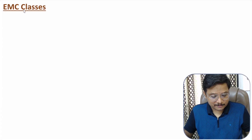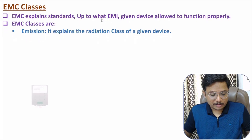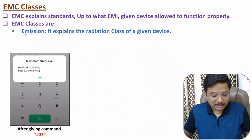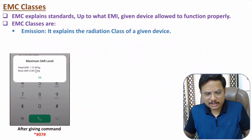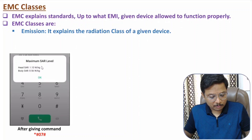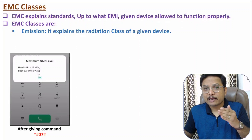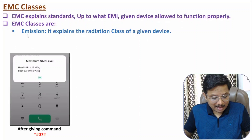Now I will discuss about EMC classes. EMC explains standards for up to what level of EMI a given device is allowed to function properly. The first class of EMC is based on emission — it explains the radiation class of a given device. For example, in your mobile, if you write *#07#, you can observe the SAR level. For my mobile, it is 1.13 W/kg for head SAR and 0.56 W/kg for body SAR. That is explained as per emission — for a given device, how much radiation or emission is there. That comes under the emission class of EMC.